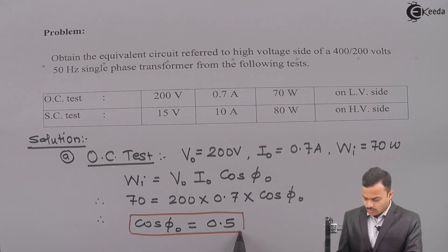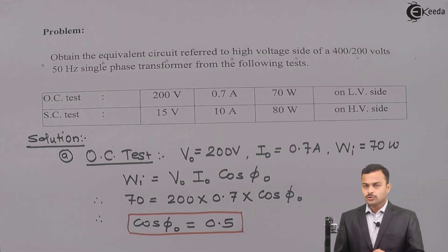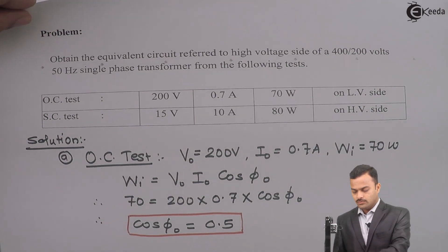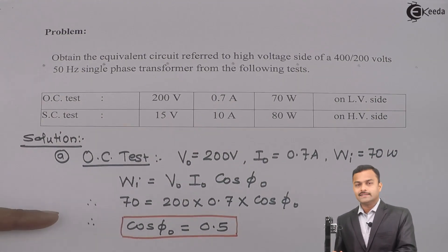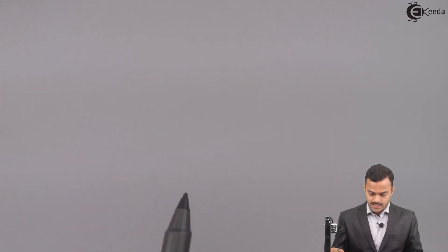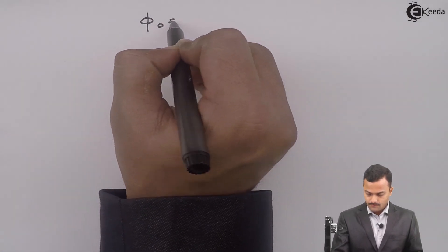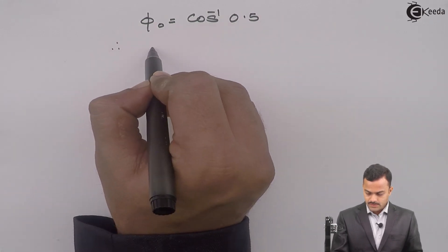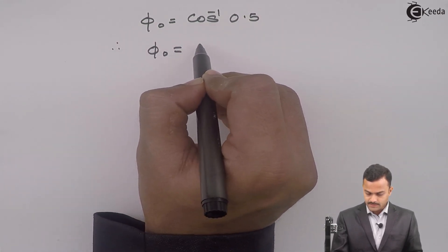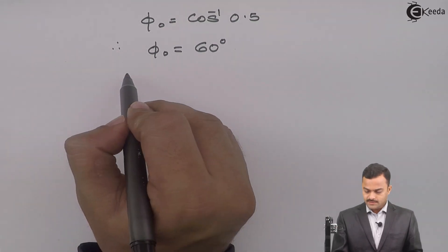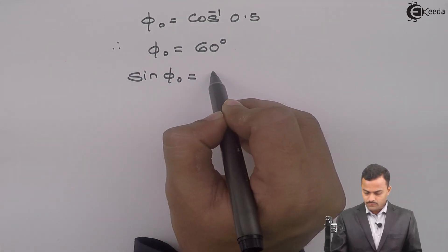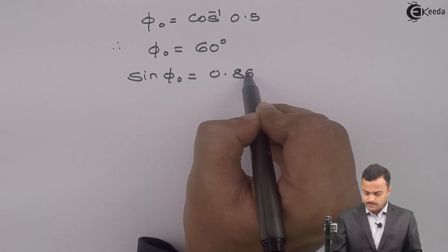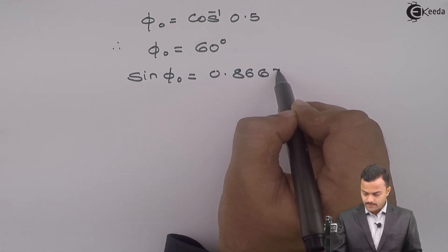I am going to use this for further calculation. But besides cos φ0, I should know sin φ0 also. For that purpose from cos φ0, I will calculate φ0 first. So φ0 will be cos inverse 0.5 which is nothing but 60 degree. And sin φ0 will be equal to 0.8667.